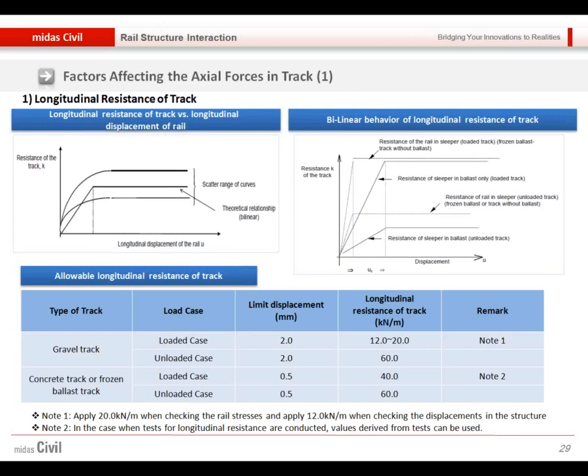So what can we try to change? What is the factor affecting the axial forces in the track? Firstly, the longitudinal resistance of the track is the major factor, which is the ballast stiffness.